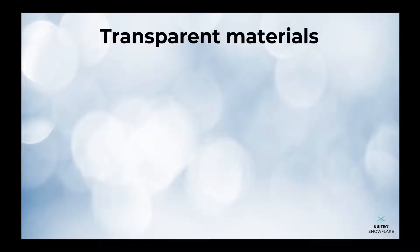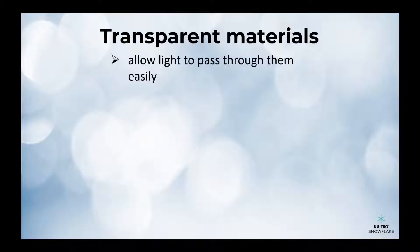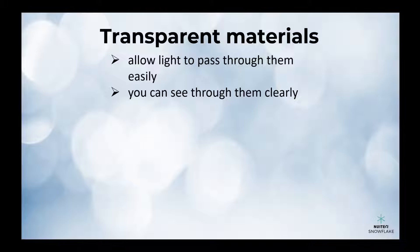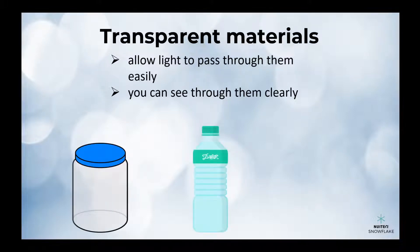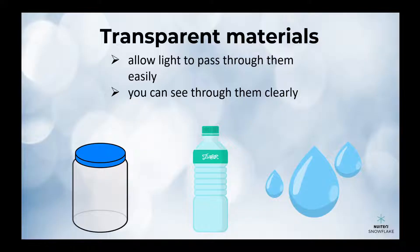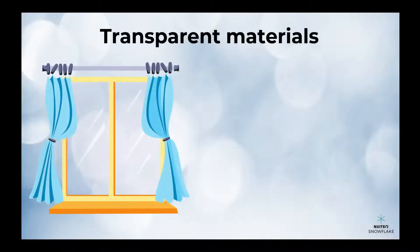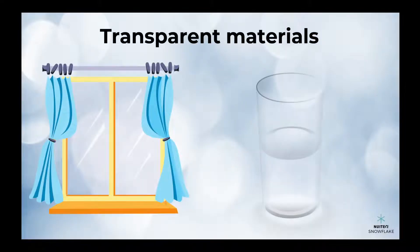Let's start with transparent materials. These are materials that allow light to pass through them easily, so you can see through them clearly. Some examples of transparent materials include glass, clear plastic, and water. When you look through a window or drink water from a clear glass, you are looking through a transparent material.